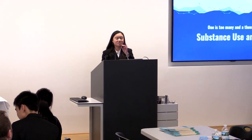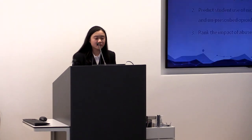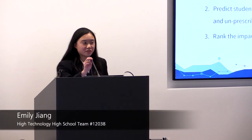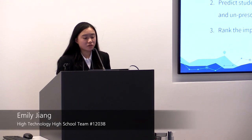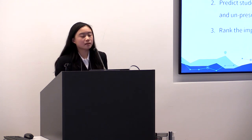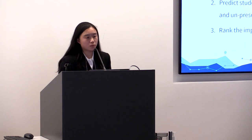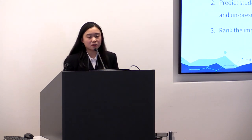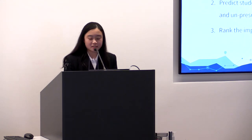Good morning. We will now be presenting our solution to this year's M3 challenge problem: substance use and abuse. The problem we were tasked with addressing is threefold. First, we constructed a math model to predict the spread of nicotine use due to vaping over the next decade and to compare this trend to that of cigarettes. In part two, we simulated the probability that a given individual would use nicotine, marijuana, alcohol, and unprescribed opioids, and we applied our model to 300 high school seniors. Finally, in part three, we developed a metric to quantify the impact of substance abuse and used it to rank the same four substances.